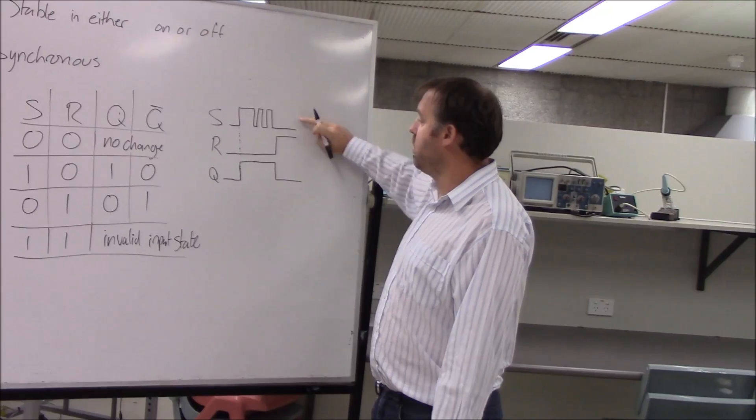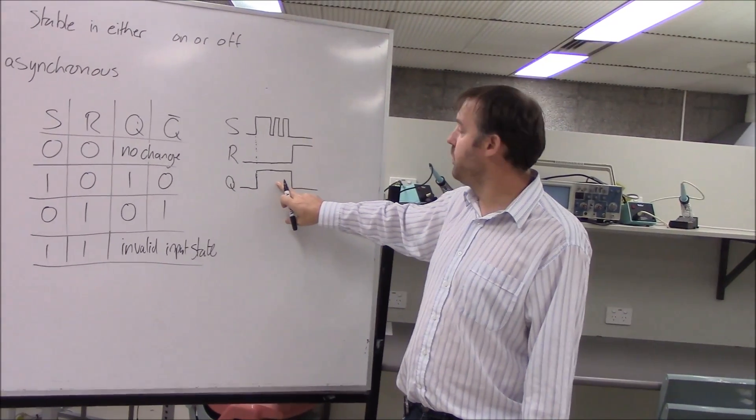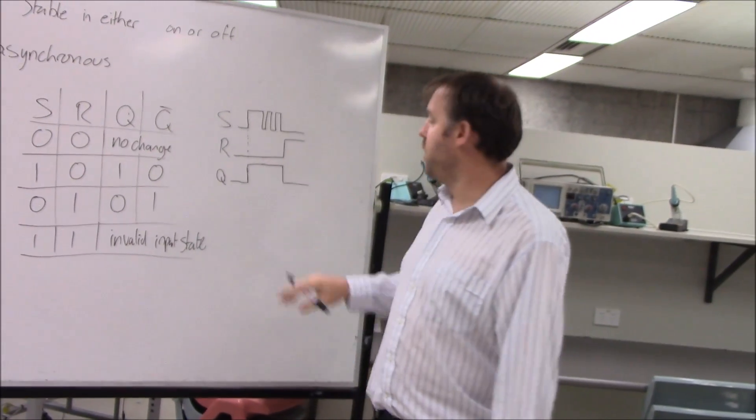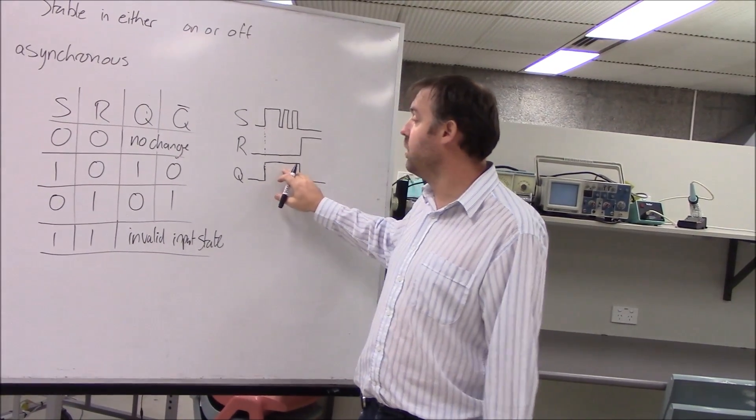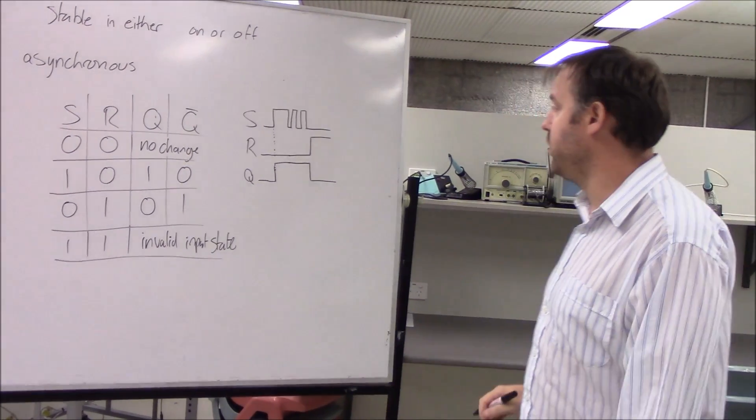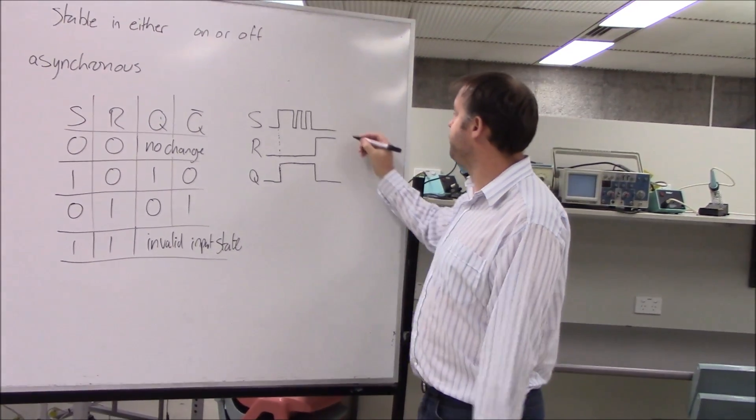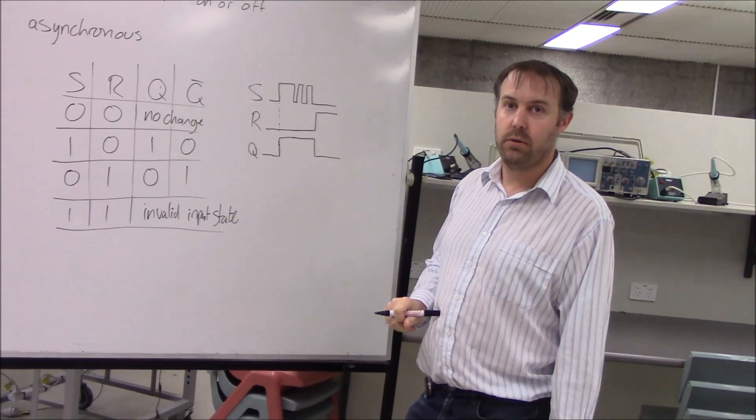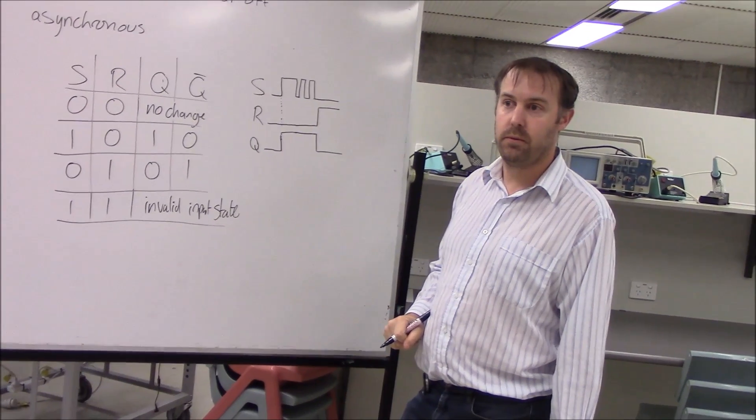And it wouldn't change the output because it's already high. And it doesn't want to change. It won't change back to low again until we get our reset signal. So the way I see it is when you set high, then Q is high, and then when you reset high, then Q-bar is high.